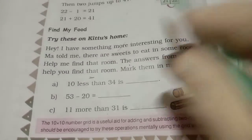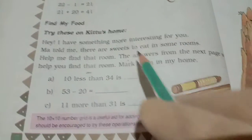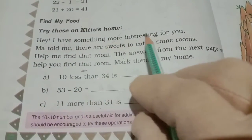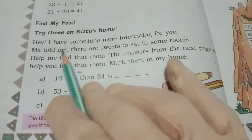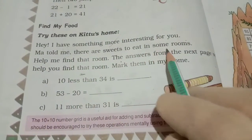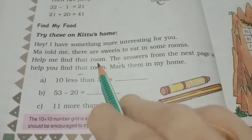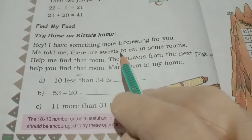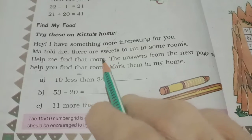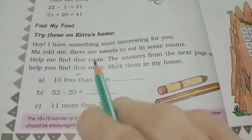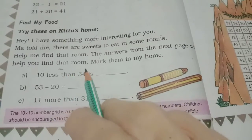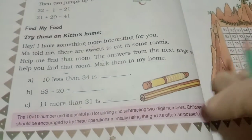Now I am continuing this exercise, find my food. Try this on Kittu's home. Hey, I have something more interesting for you. Ma told me there are sweets to eat in some rooms. Help me find that room. The answer from the next page will help you find that room. Mark them in my home.